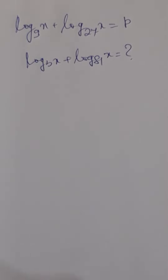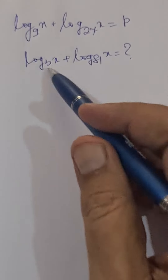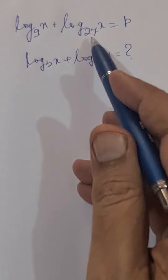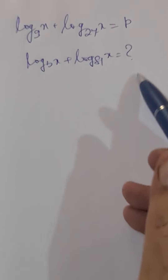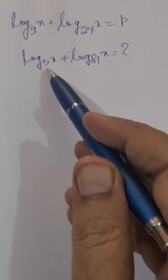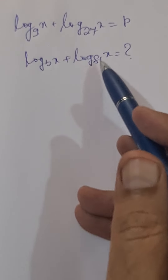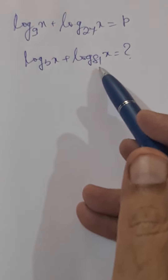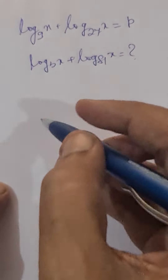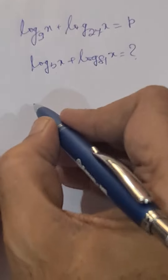Welcome to my channel. We will solve one question on logs. We are given that log x to the base of 9 plus log x to the base of 27 is equal to p. We have to find out log x base of 3 plus log x on the base of 81 in terms of p.